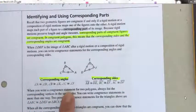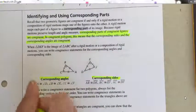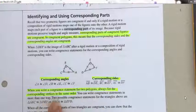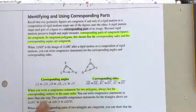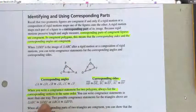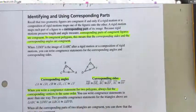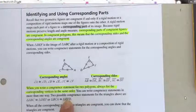When you write a congruent statement for two polygons, always list the corresponding vertices in the exact same order — that's very important. You can write congruent statements in more than one way. Here are two possible congruent statements: triangle ABC is congruent to triangle DEF, where A and D are first since they correspond, B and E go second, and C and F go last. You can also write triangle BCA congruent to triangle EFD — notice that corresponding angles are still in the same position.